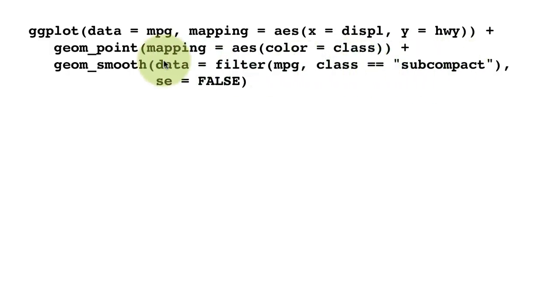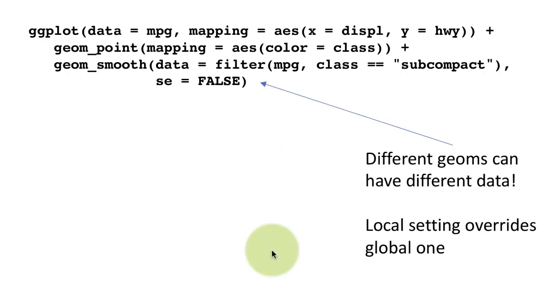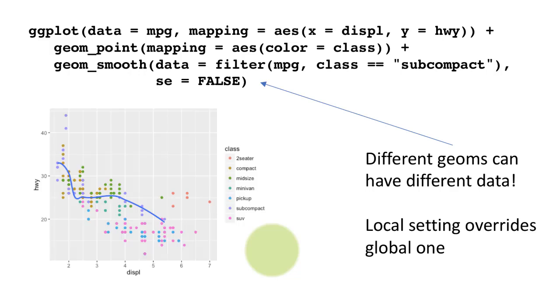So this layer has a different data than this layer. Because this layer got its data from the global definition. So this is plotting the entire data set. Whereas this layer is plotting only the subset of subcompact cars. So again, what this is showing us is that each layer can have its own data.